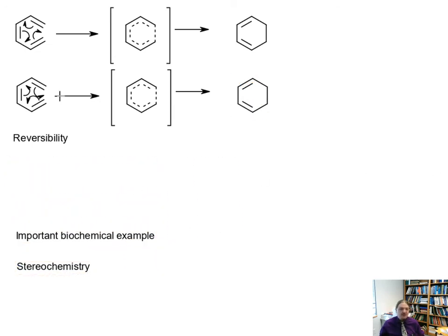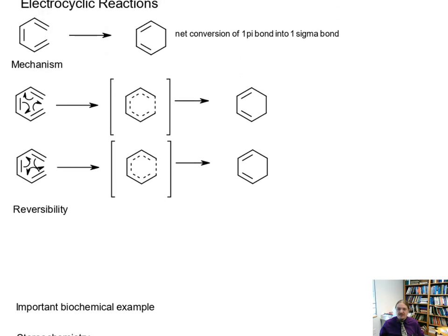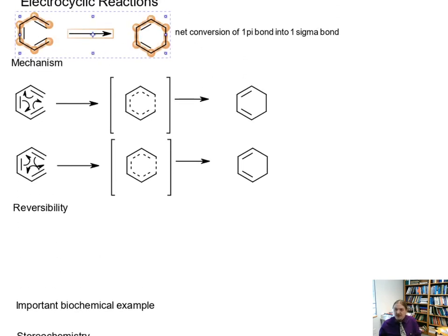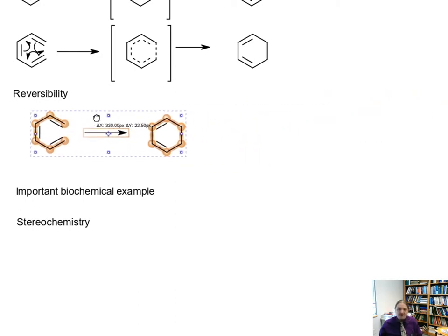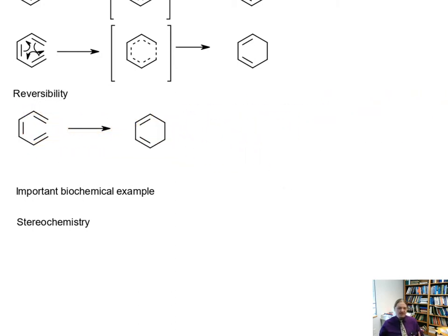Like all pericyclic reactions, electrocyclic reactions are reversible, though just how reversible they are depends on the structure of the product. This reaction here, the conversion of 1,3,5-hexatriene into cyclohexadiene, favors the cyclic product.